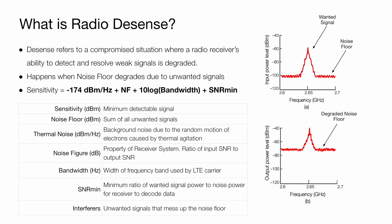What is radio desense? Desense refers to a phenomenon where a receiver's ability to detect weak signals is compromised — in other words, a degradation of receiver sensitivity. For a radio system, sensitivity refers to the minimum detectable signal. It is defined as the sum of the thermal noise floor (−174 dBm/Hz), the noise figure (a property of the receiver system), bandwidth, and the minimum signal-to-noise ratio as defined by your receiver system.